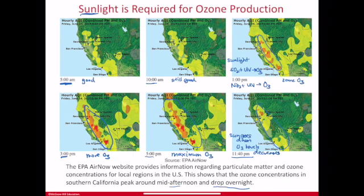Ozone levels drop at night and peak around mid-afternoon. The way to plan your outdoor activities is to do something early in the morning, like before 10 a.m., or later at night after 6 or 7 p.m., if you're concerned about ozone exposure. Your body can recover after ozone exposure, but PM2.5 is different — those particles end up going into your bloodstream, and depending on what those particles are, they can have some serious health effects.